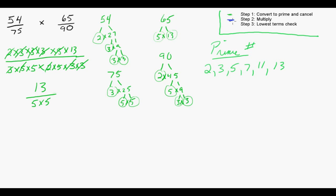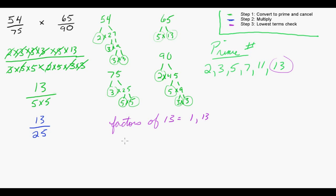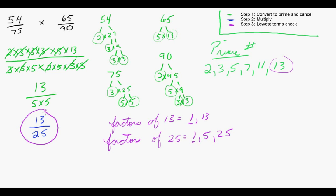Moving on to step 2 — it's just multiplying. 13 is the only number left on top, and 5 times 5 is 25. As always, we want to double-check to make sure we're in lowest terms. The factors of 13 are 1 and 13 — we know that because 13 is in our prime factors list. The factors of 25 are 1, 5, and 25. It's not surprising that the only thing they have in common is 1, so we can state that 13 over 25 is in lowest terms.